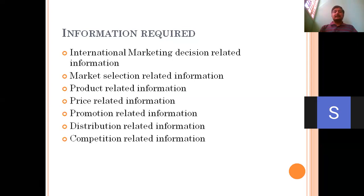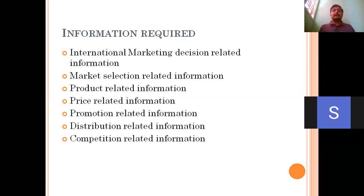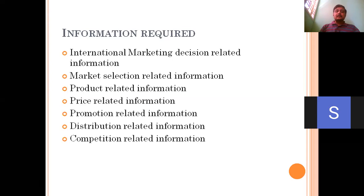Take India as an example: India has a huge amount of geographical space. If you think that having a distribution channel of wholesalers and retailers is sufficient, that is again a failure. Because of India's vast geographical space, every state needs to have an agent to distribute your products. Whether you need this kind of agency relationship in India becomes a big question.